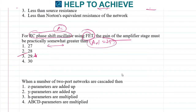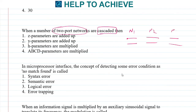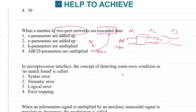Next: when a number of two-port networks are cascaded, which parameters are used? If networks N1 and N2 are cascaded, among Z parameters, H parameters, Y parameters, and ABCD parameters, the ABCD (transmission) parameters are multiplied when two-port networks are cascaded. The correct answer is ABCD parameters are multiplied.